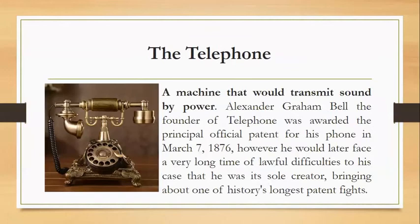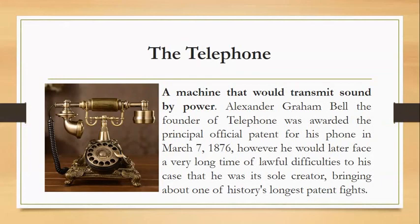From the telegraph, our communication evolved to having a telephone. Alexander Graham Bell, best known as the designer of the phone, worked at a school for the hard of hearing, while at the same time endeavoring to invent a machine that would transmit sound by electricity. Bell was awarded the principal official patent for his telephone on March 7, 1876. However, he would later face a very long time of lawful difficulties to his claim that he was its sole creator, resulting in one of history's longest patent fights.